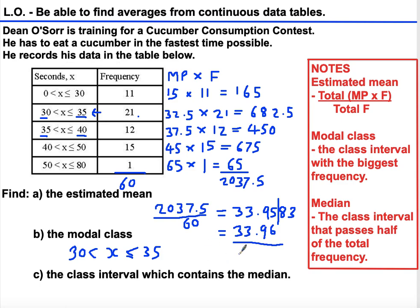Now, the class interval that contains the median. Because we've got 60 values, the median is going to be the 30th value. We need to look at the cumulative frequency, that is a running total of the frequency, to see when it goes past the 30th value.